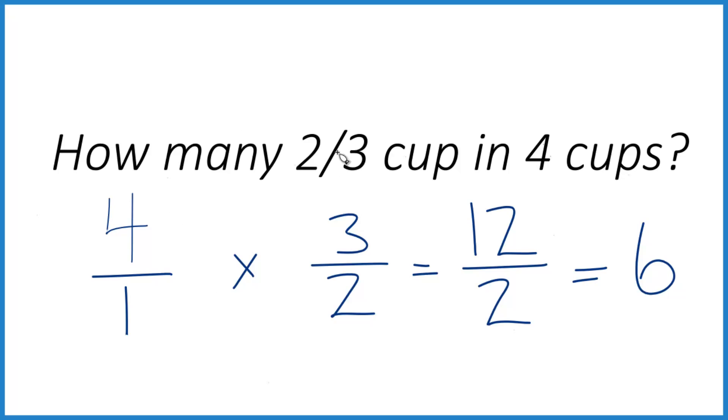Six times two is twelve. So when we ask the question, how many of these two-third cup measures go into four cups? The answer, we need six of them.